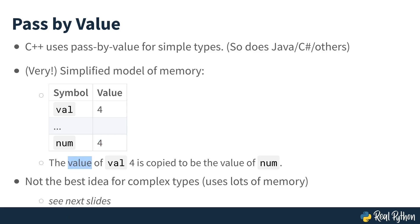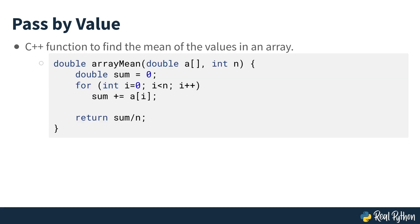Pass-by-value works for simple types, but not for more complicated structures. Here is a simple C++ function to find the mean of a collection of numbers. In this case, provided in something called an array. In C++, we have to pass the array and the size of the array as arguments to this function. The array is being saved in the parameter called a and the size in n.